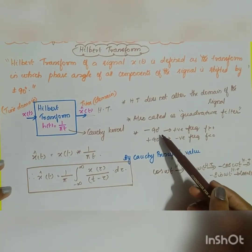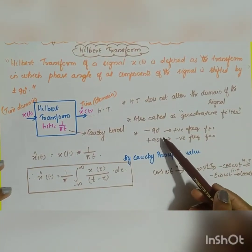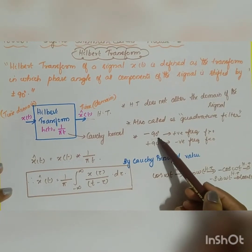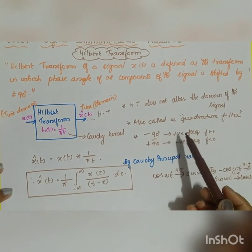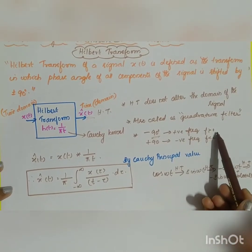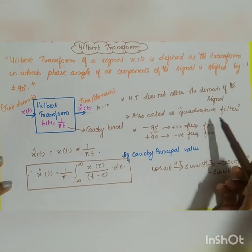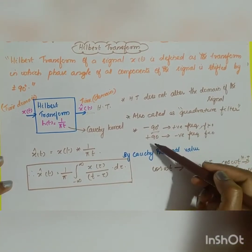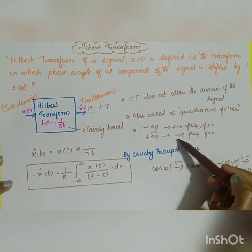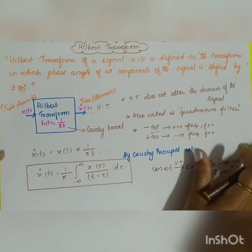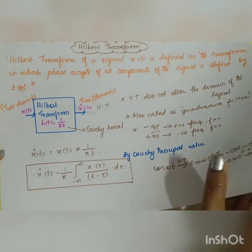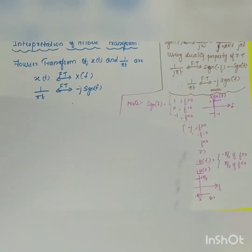The Hilbert transform provides both minus 90 degree and plus 90 degree phase shifts. Specifically, a minus 90 degree phase shift is applied to positive frequency components where f is greater than 0, and a plus 90 degree phase shift is applied to negative frequency components where f is less than 0. We will see this confirmed in the derivation.